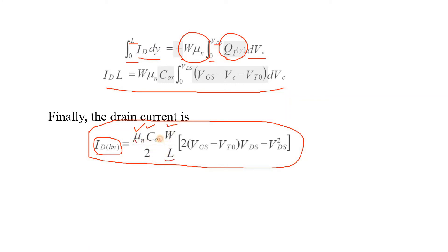The width-to-length ratio W/L is fixed depending on the manufacturing process and technology node — for example, 90 nanometers. The only parameter that can be changed by the designer is the channel width W. VT0 is dependent on VSB as discussed in previous videos. That is all as far as the linear current equation for the MOSFET operating in linear mode is concerned.